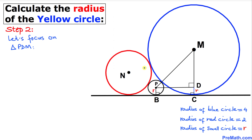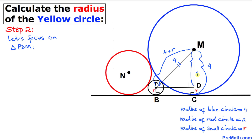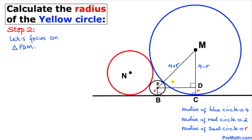Now let's focus on right triangle PDM. The radius of the blue circle is 4 units and the radius of the small circle is r, so the total length PM equals 4 plus r. On the other side, the radius of the blue circle is 4, so side DM equals 4 minus r. Since this triangle is a right triangle, we'll apply the Pythagorean theorem.